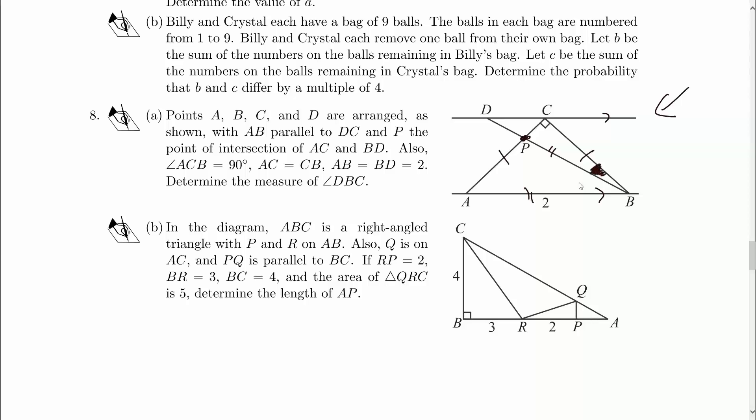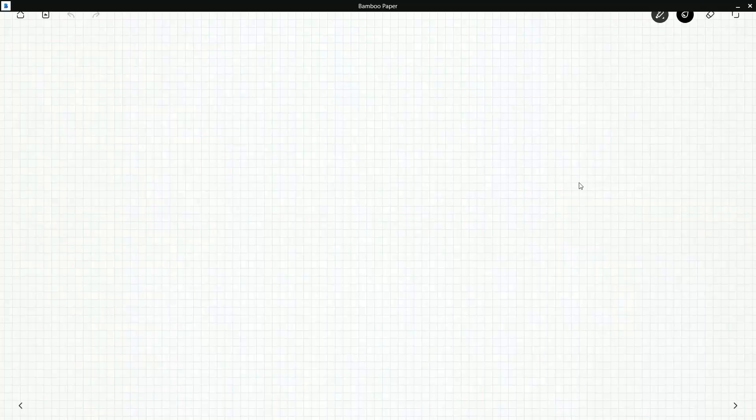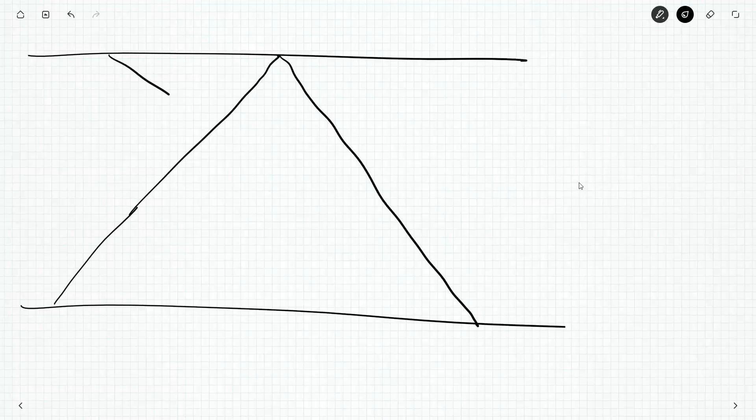Okay. So I'm noticing there's a distinct lack of things talking about P. None of the extra information we're given involves P. So I wonder how P is going to work here. I'm also noticing that if I connect up A, D, I will get a second isosceles triangle. Things to think about.